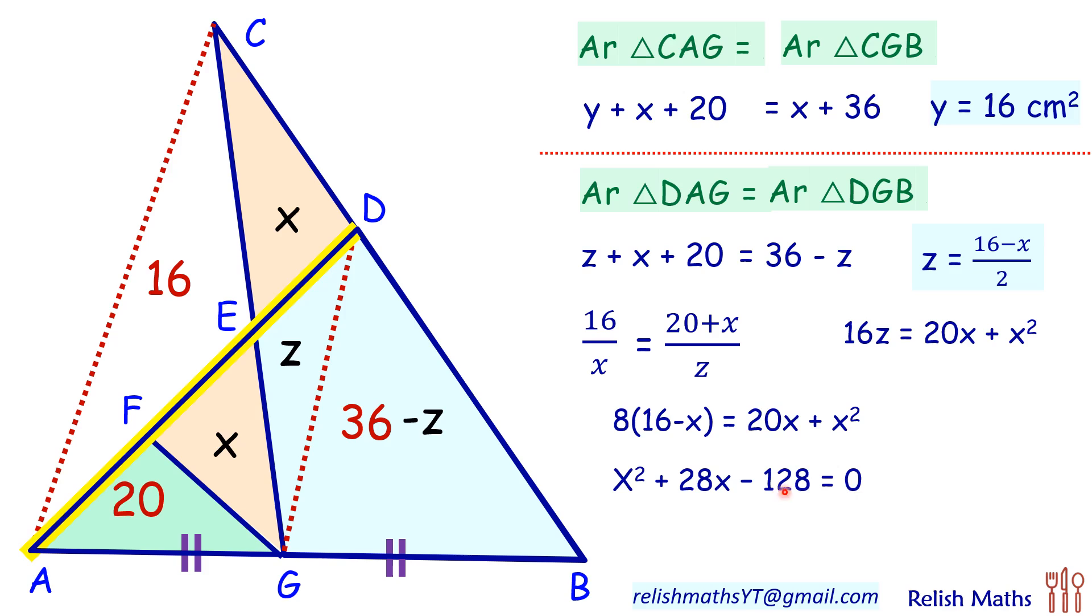We will solve it by splitting the middle term. So this 28 will split as plus 32 and negative 4. So we will get factorization as X plus 32 times X minus 4 equals 0. Of course X cannot be negative, so X equals 4, and that's our solution that X is 4 cm square.